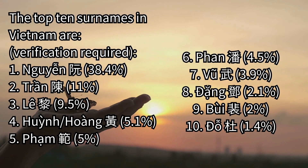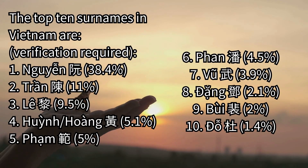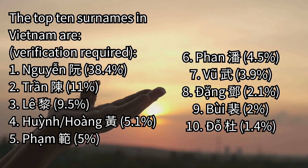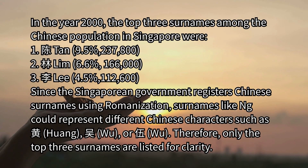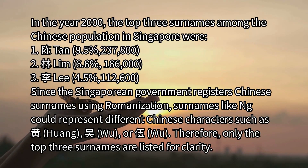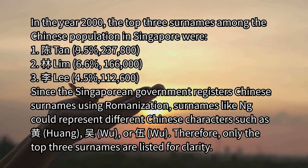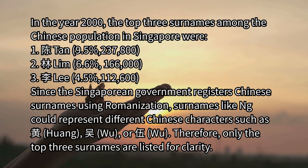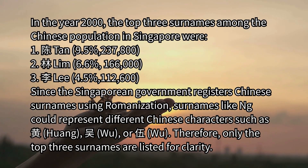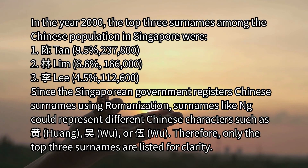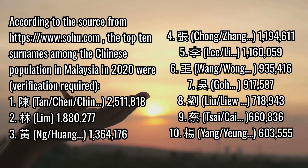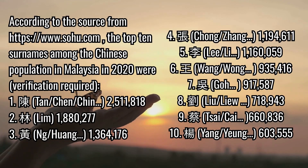The top 10 surnames in Vietnam are listed. Note that Vietnamese romanization surnames like 'Ng' could represent different Chinese characters such as Huang, Wu, or other characters — therefore only the top three surnames are listed for clarity. According to a source from soyou.com, the top ten surnames among the Chinese population in Malaysia in 2020 are also listed.